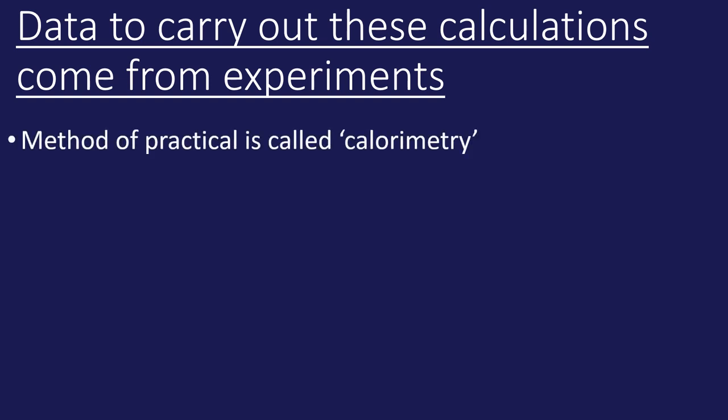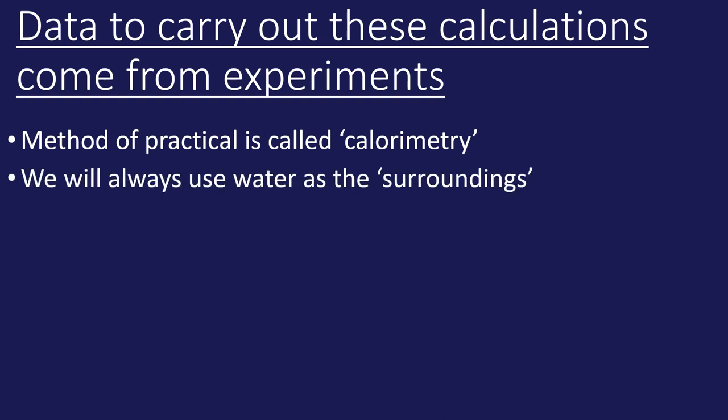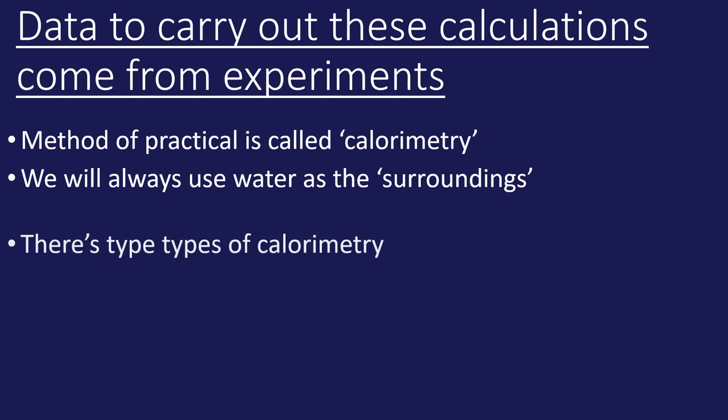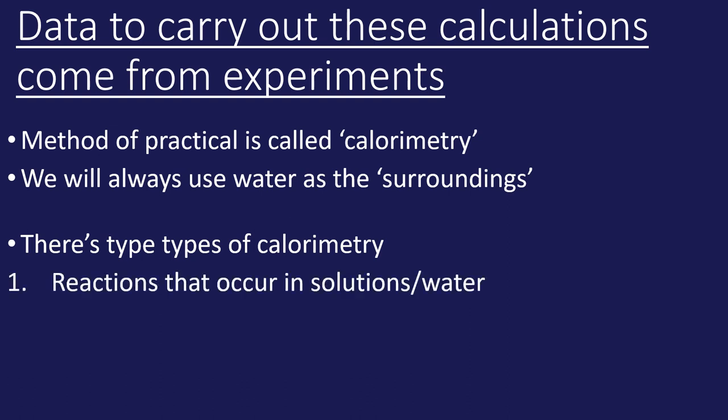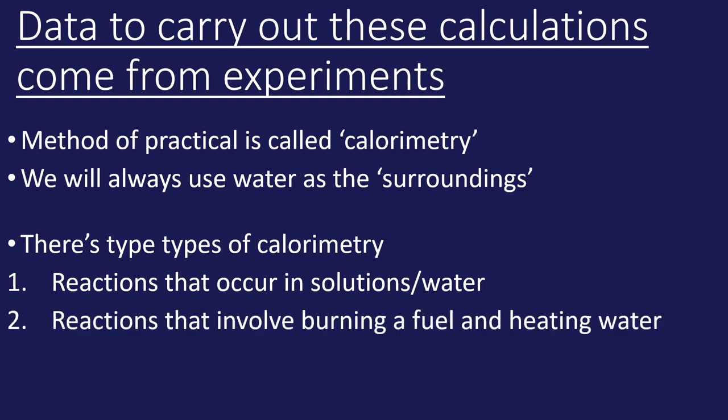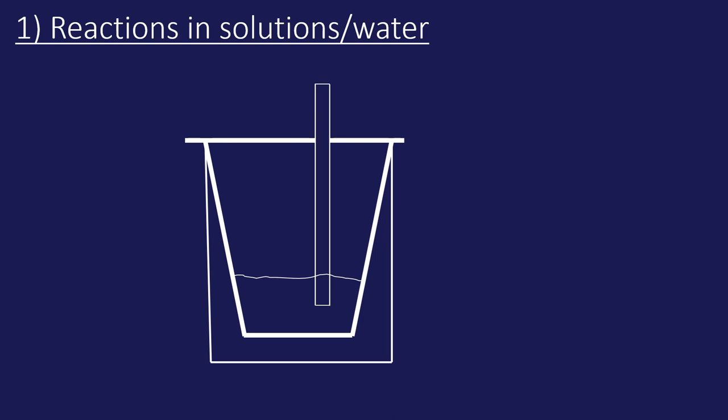Now let's look at the two different methods for obtaining experimental data to carry out these calculations. The data must come from experiments called calorimetry. In chemistry we always use water as the surroundings. There are two types: reactions that occur within solution, and burning reactions where a fuel heats up water — using the energy released by combustion.